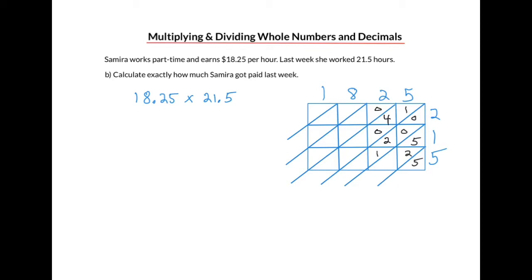And then we continue doing the same method for the next column along. 8 times 2 is 16. 8 times 1 is 8. 8 times 5 is 40. And then the last column in the last column. So 1 times 2 is 2. 1 times 1 is 1. And 1 times 5 is 5.